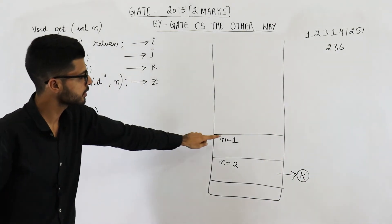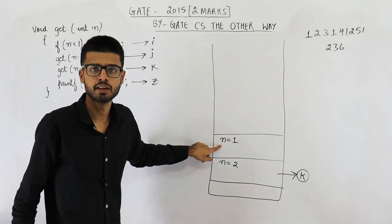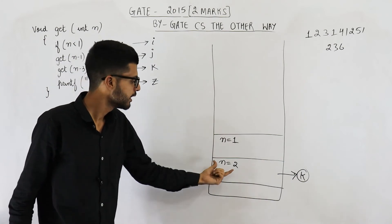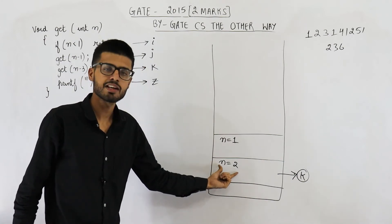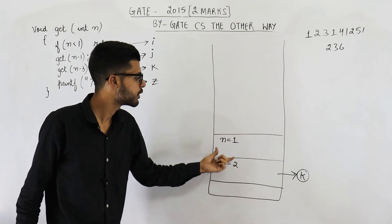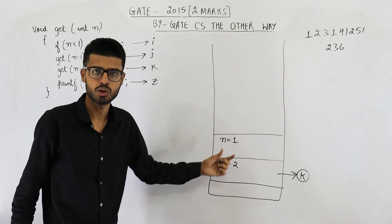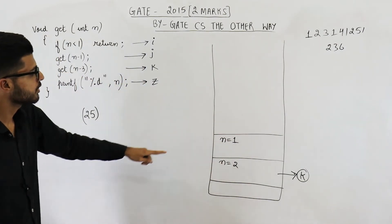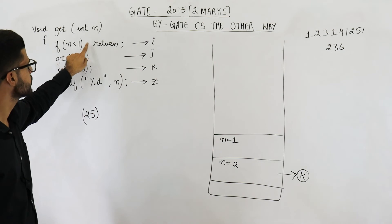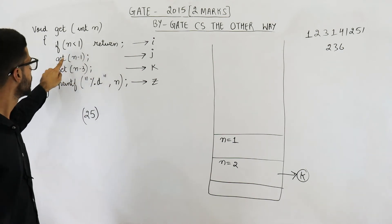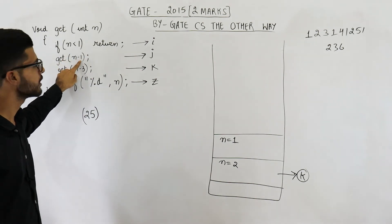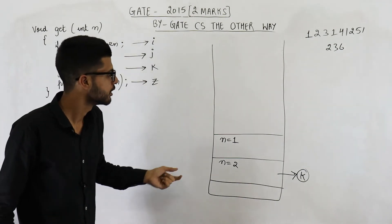Now let us come to the new function. It will start execution from line i, while the previous one is paused. So this function is waiting. Start from line i — this condition is false, so it will not return. It will also call a new function with 1 minus 1 = 0 as parameter.